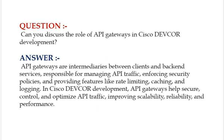Your answer should be: API gateways are intermediaries between clients and backend services, responsible for managing API traffic, enforcing security policies, and providing features like rate limiting, caching, and logging. In Cisco DevCore development, API gateways help secure, control, and optimize API traffic, improving scalability, reliability, and performance.